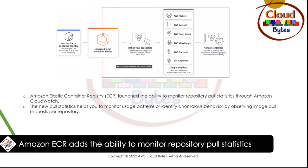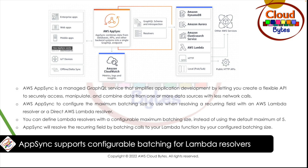Moving on to the next news. The next news is coming from AppSync. AppSync supports configurable batching for Lambda resolvers. AppSync now supports configurable batching sizes for AWS Lambda resolvers and direct AWS Lambda resolvers. AppSync is a managed GraphQL service that simplifies application development by letting you create a flexible API to secure access, manipulate, and combine data from one or more data sources with less network calls.